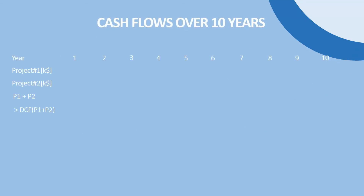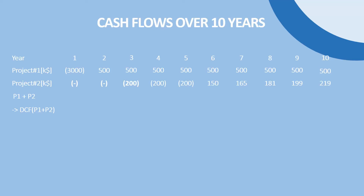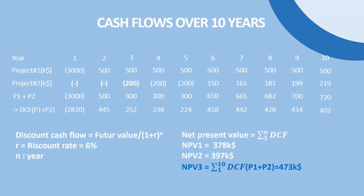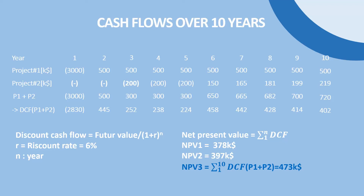Another option would be to start by automating the production line first, and then by the third year — when you've already generated an extra half million per year in revenues — invest in the new chocolate with cannabis product. After calculating the sum of the cash flows, discounting them to the present, and summing up those discounted cash flows, we see that the third option of the combined project 1 and 2 is the most profitable over the next 10 years compared to each project separately.